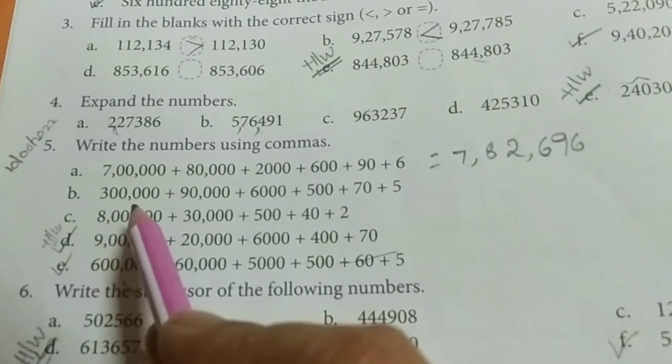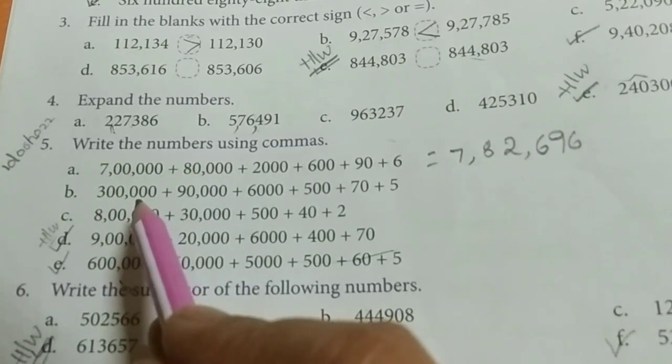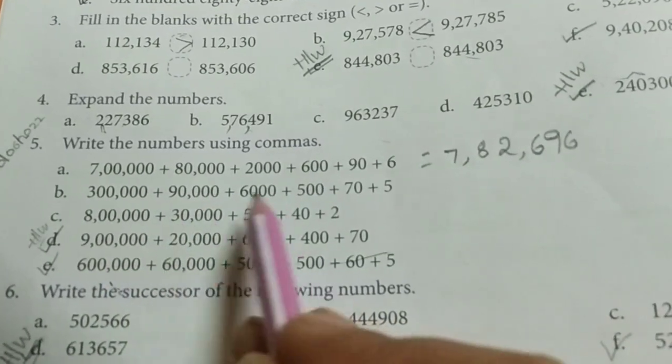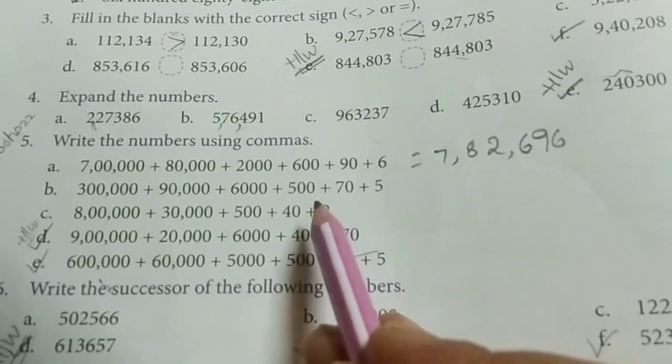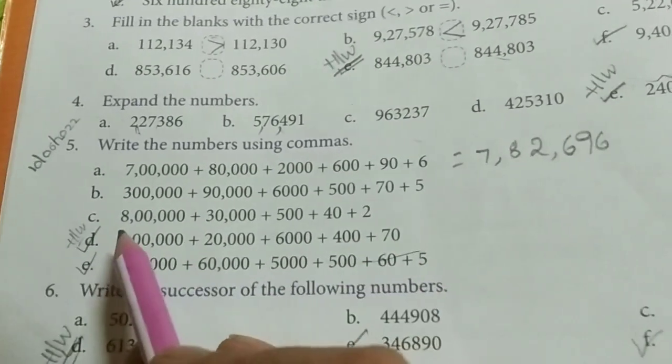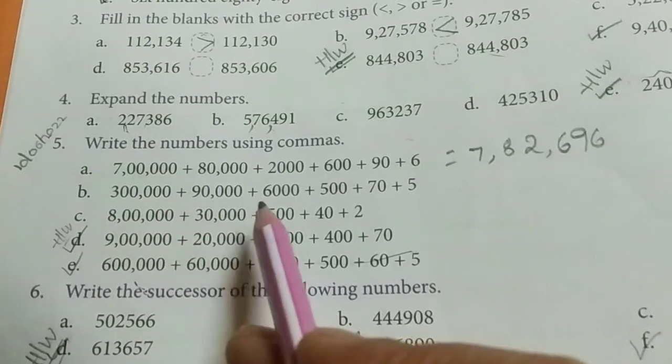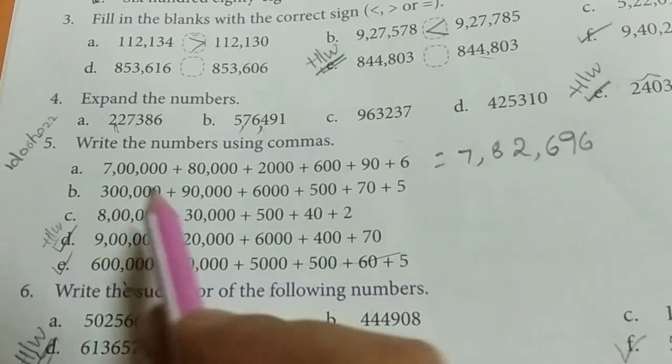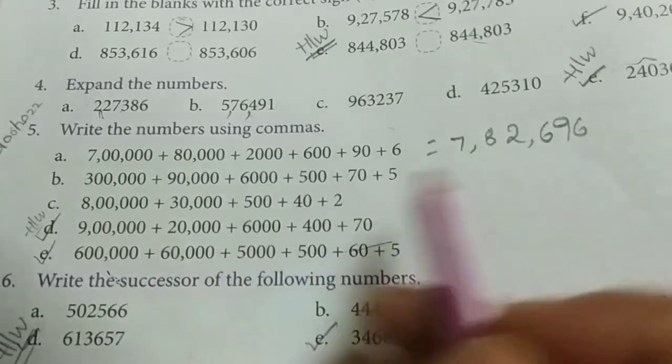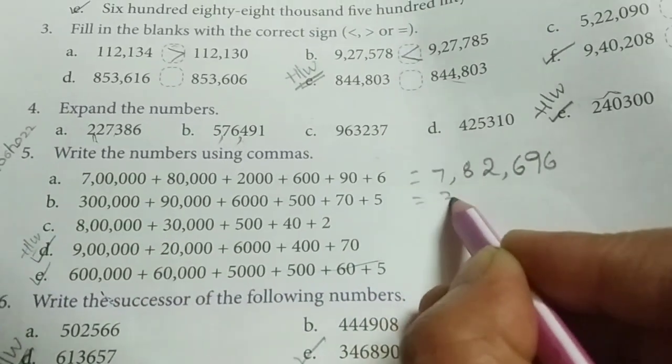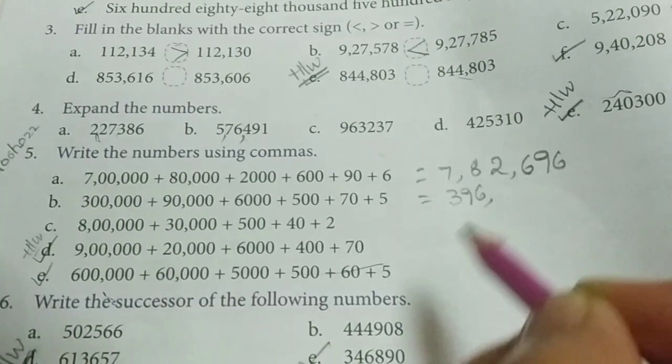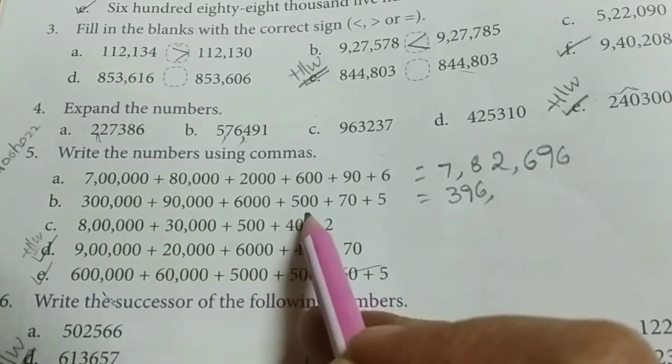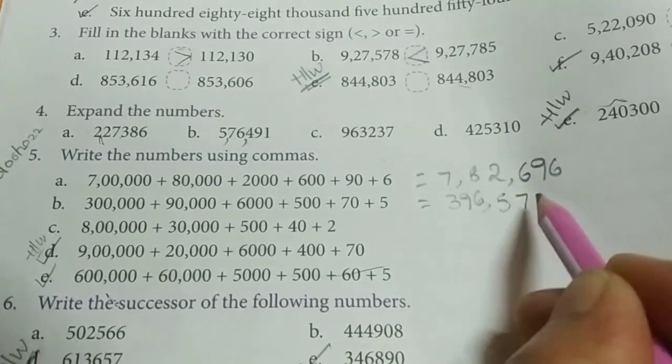30,000 plus 3,000 plus 7,000 plus 5. This is international system commas are given. So, 396,000. 396,000 you have to give a comma next 575